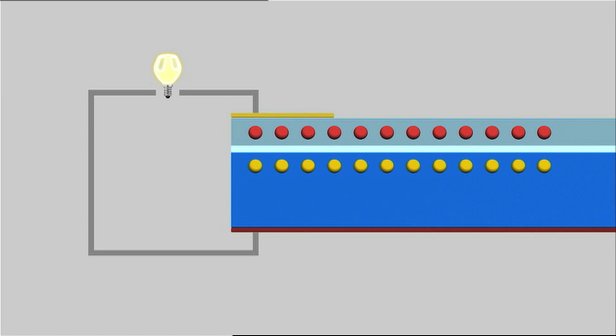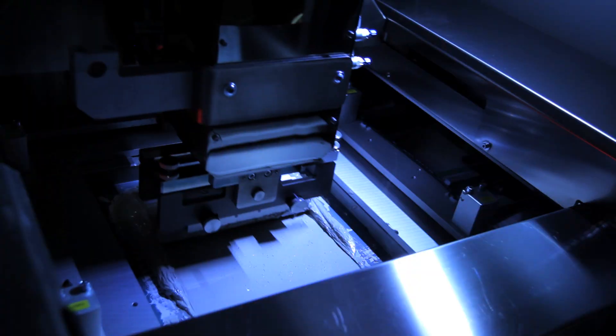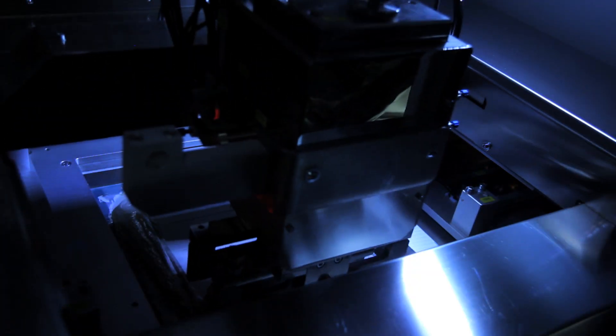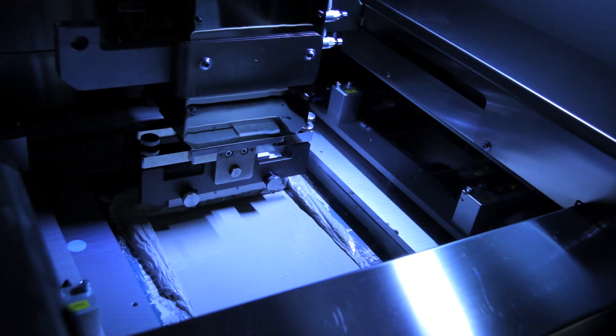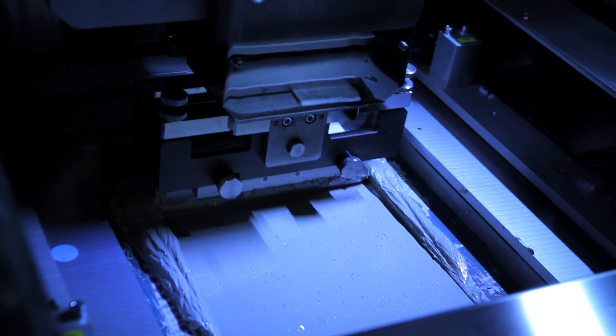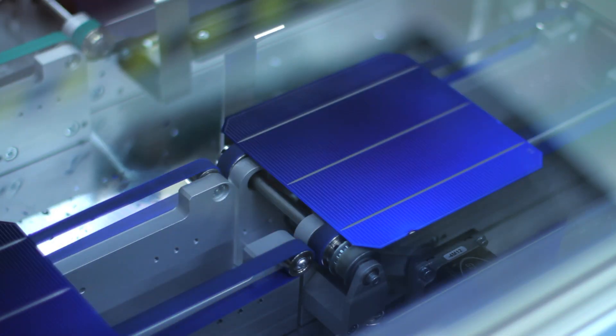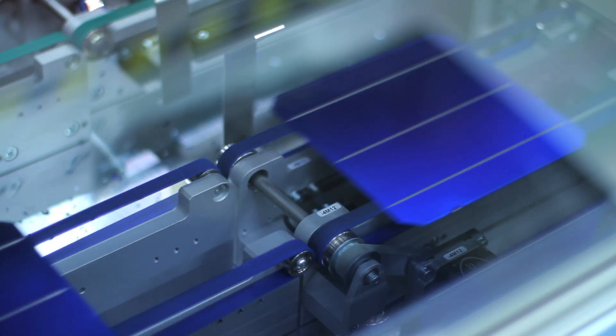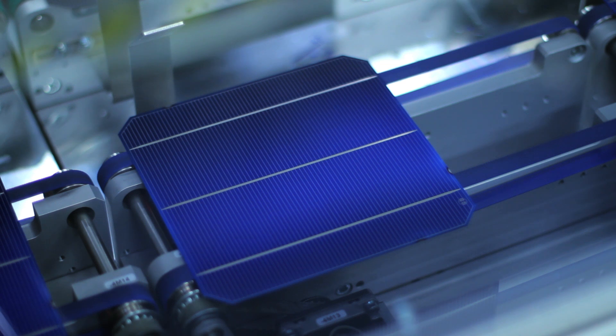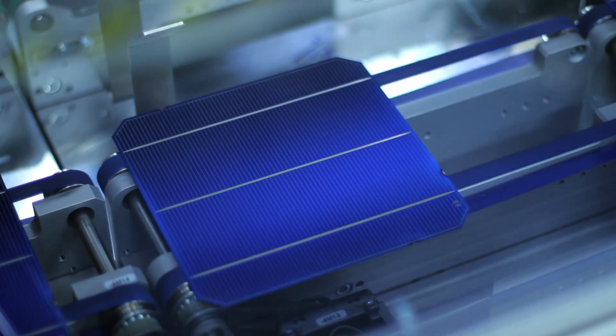But how is the power generated in the individual cells transported? A stamp presses a silver alloy onto the front of the cells, creating the typical grid pattern. This silver coating ensures that the power can be transported later on.